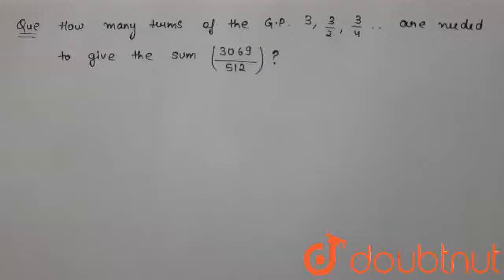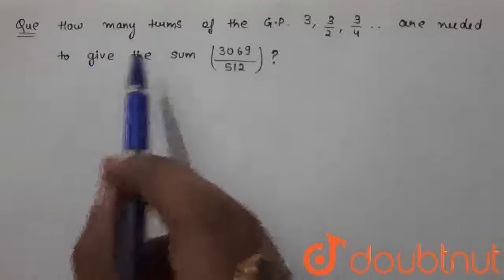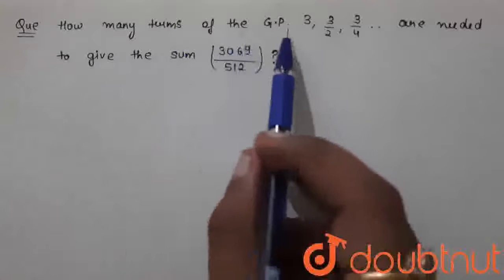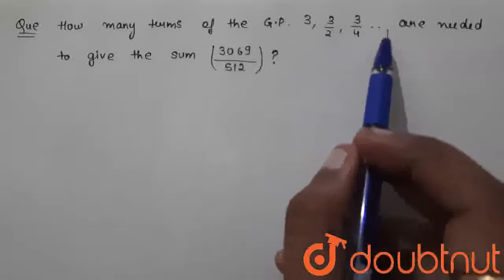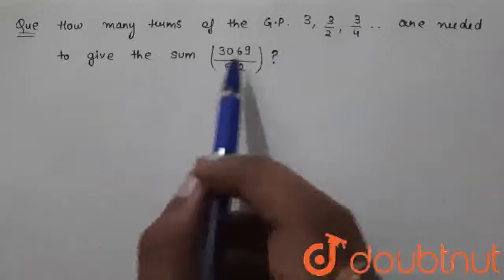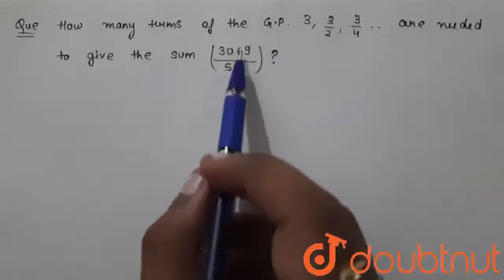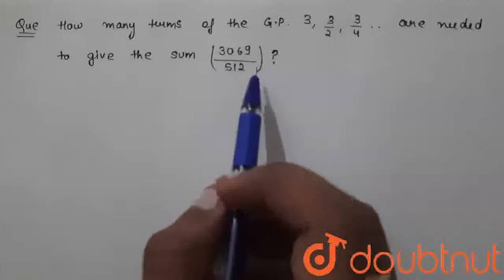Hello friends, the question says: How many terms of the GP 3, 3/2, 3/4, and so on are needed to give the sum 3069 divided by 512?